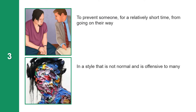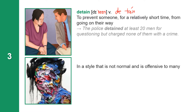The next word means to prevent someone for a relatively short time from going on their way. The word is Detain. Detain is a verb. It has two syllables: D-E-T-A-I-N. The police detained at least 20 men for questioning but charged none of them with a crime.